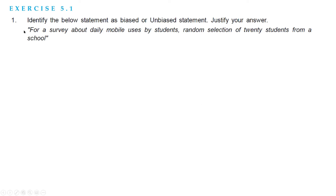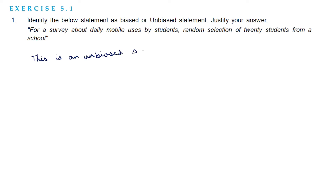The first question from exercise 5.1: identify the below statement as a biased or unbiased statement and justify your answer. For a survey about daily mobile use by students, a random selection of 20 students from a school is made. Since the students are randomly selected, this is an unbiased statement.